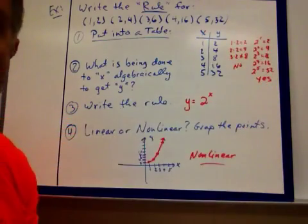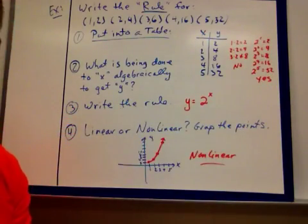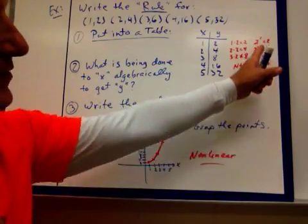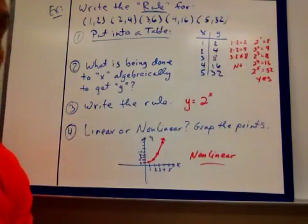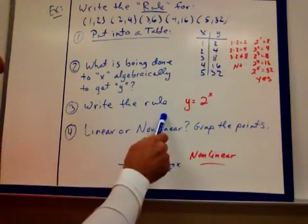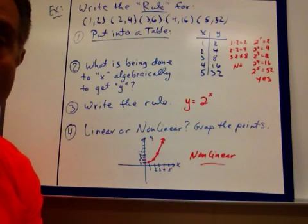And 2 to the fifth power is 32. So yes, that's my rule. There's my pattern. I'm taking that x value and making it an exponent of 2, and I'm getting the y value. So I write the rule. y equals 2 to the x power.